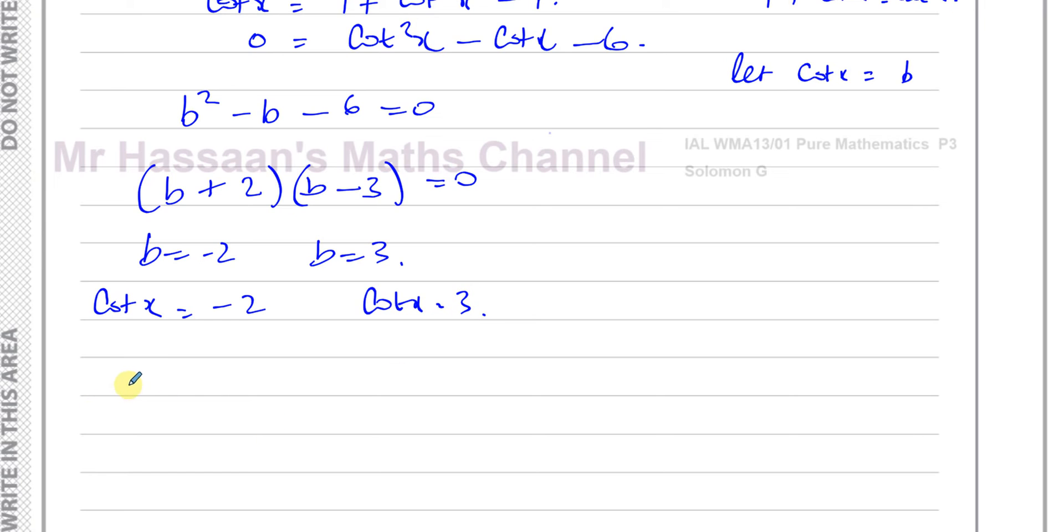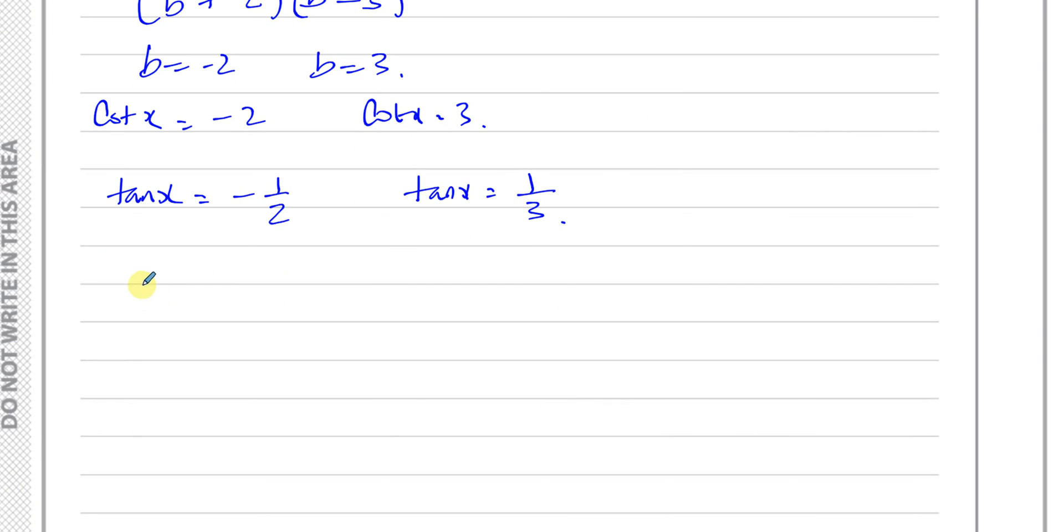So now I can say that that means tan x, which is the reciprocal of cot x, is minus 1 half. And I can say tan x is equal to the reciprocal of 3, which is 1 third. So now I can use my calculator, and I can find the inverse tan of negative 1 half, and the inverse tan of 1 third.